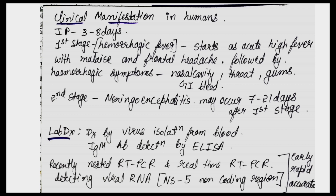Coming to clinical manifestations in humans: the incubation period is 3 to 8 days — the time between entry of the pathogen and appearance of the first symptoms. The first stage is hemorrhagic fever, which starts as acute high fever with myalgia and frontal headache, followed by hemorrhagic symptoms from the nasal cavity, throat, gums, and GI bleed.